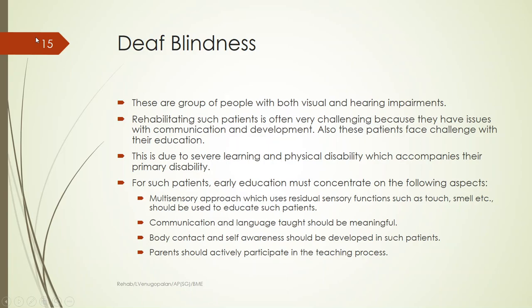For such patients, early education must concentrate on a multisensory approach. Since they can't hear or see, touch is one of the major sense organs used to educate and train these people, along with smell. Communication and language should be based on these two sense organs and taught in a meaningful manner. Body contact and self-awareness should also be developed. A major requirement is that parents actively participate, as the support of parents or carers is key to the success of rehabilitation therapy.